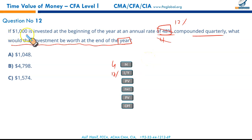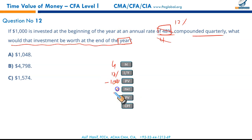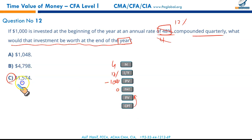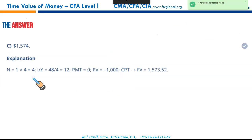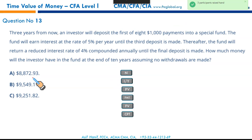I'm sure you got it correctly — that is C. Next — this is a challenging question that needs my involvement. Three years from now, an investor will deposit the first of eight $1,000 payments into a special fund. The fund will earn interest at 5% for the first phase.